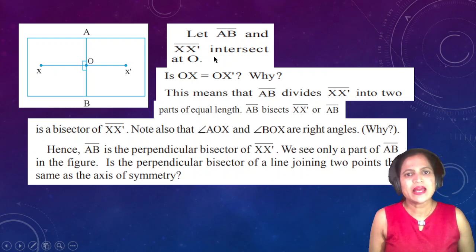Let AB and XX' line segment intersect at O. Is OX equal to OX'? Yes, OX equals OX'. Why? This means that AB divides XX' into two equal lengths. AB bisects XX', or AB is a bisector of XX'.